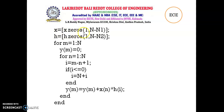That means some zeros are to be appended to the two sequences, which is known as zero padding. Here, X equals to X zeros of 1, N minus N1. H equals to H zeros of 1, N minus N2.